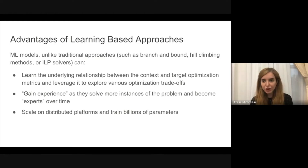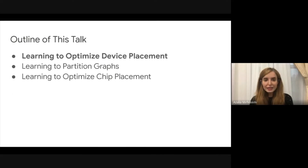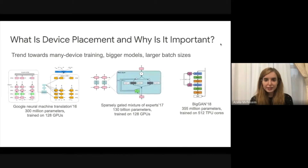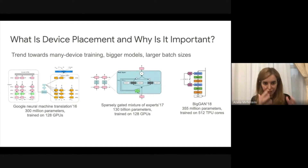This is very different from baseline methods such as branch and bound and hill climbing. Another property we like about learning-based methods is that we know how to scale them and distribute them across distributed platforms and train models with billions of parameters. The outline of this talk covers three projects on learning to optimize systems and chips. The first is learning to optimize device placement — the problem of taking a computational graph, for example a neural net, and mapping it onto hardware devices such as GPUs, TPUs, or CPU cores.